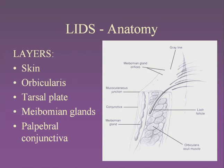Moving on to the eyelids: the orbicularis oculi is the voluntary muscle used to blink, right under the skin of the eyelid. The tarsal plate is a collagenous condensation — not true cartilage — containing meibomian glands, which secrete the waxy portion of the tear film. The conjunctiva is an extension of the skin moving back adjacent to the eye. The difference from normal skin is that it's non-keratinized stratified squamous epithelium, so it's smooth and doesn't cause friction on the eye.